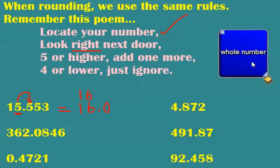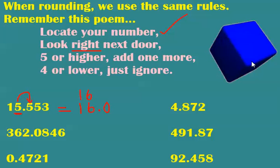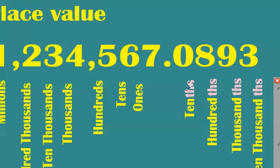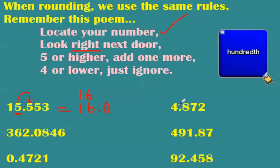Let's try a more difficult one — rounding to the hundredths. Going back to our number, we count one, two place values after the decimal. There's our hundredths place. So here's my decimal: one, two — there's my hundredths digit. I'm going to look right next door and I have a two. Two is four or lower, so I'm going to just ignore.